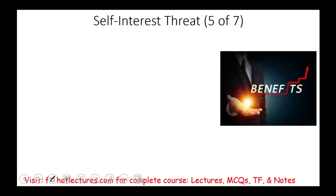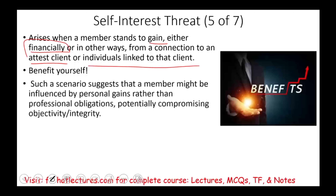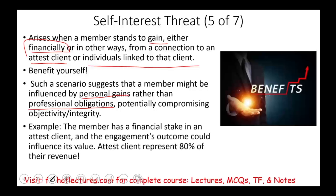We could also have the self-interest threat — number five of seven. This arises when a member stands to gain financially, personally, or professionally from a connection to an attest client or individuals linked to that client. Here, you are looking after your own benefit — your self-interest. A member might be influenced by personal gain rather than professional obligation, potentially compromising your integrity and objectivity. An example would be a member who has a financial stake in the attest client — for instance, you're auditing a company and you own stocks in that company. The engagement outcome could influence the value of your stocks. Or, this client represents 80% of your revenue, so you want to treat them well because losing them means losing 80% of your revenue. That's a self-interest threat.